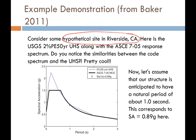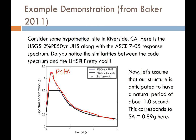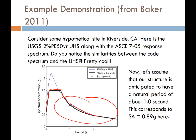Let's consider a hypothetical site located in Riverside, California. In this plot, there are two response spectra. One is the plot we get from a PSHA from the USGS. The other response spectrum comes from building code. You'll notice that the two response spectra are very similar, especially at higher periods — and that's no coincidence, because the building code response spectra tend to correspond to or come from the probabilistic seismic hazard analysis from the USGS.